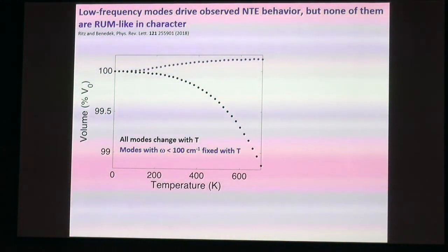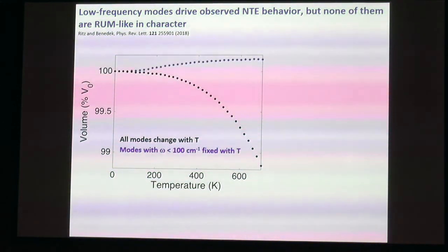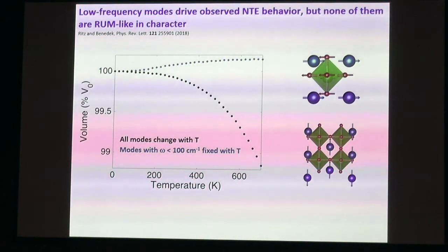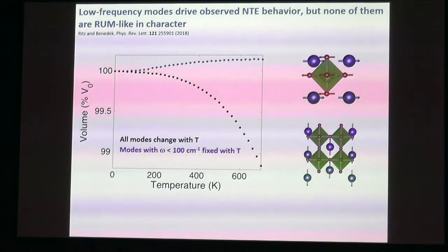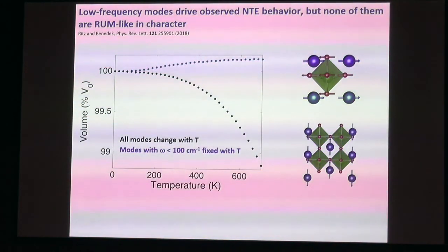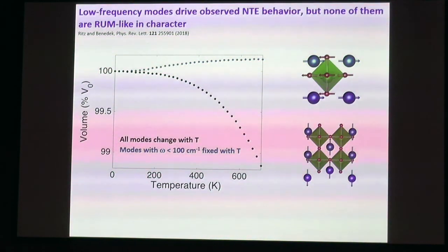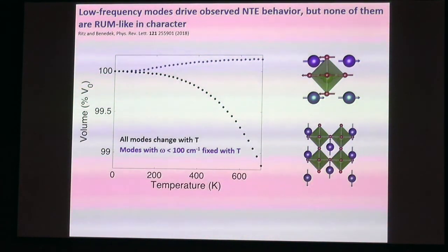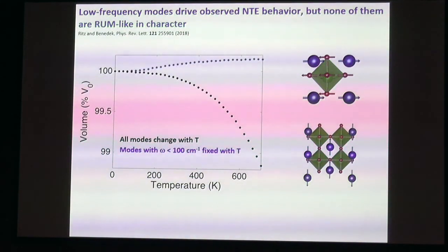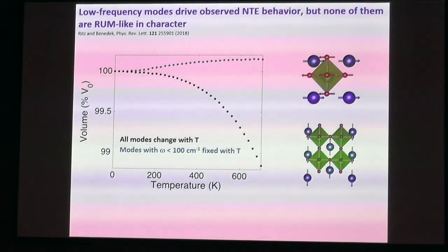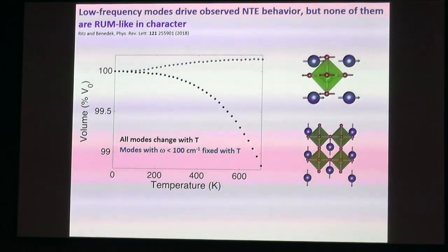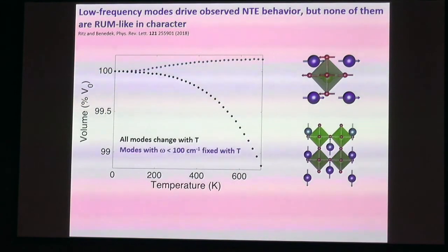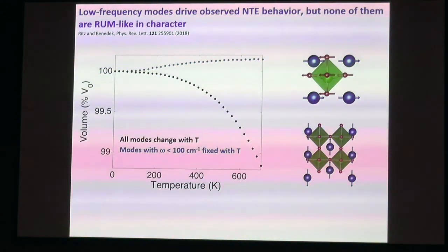We then looked at what these low-frequency modes are actually doing by examining their eigenvectors. They correspond mostly to translations of the lead atoms along different crystallographic axes. If you're familiar with the NTE literature, you may have heard of RUMs—rigid unit modes—which in a perovskite would be rigid rotations or tilts of the transition metal octahedra. These can be very important for NTE in some systems, but it doesn't appear that they are in this particular system.